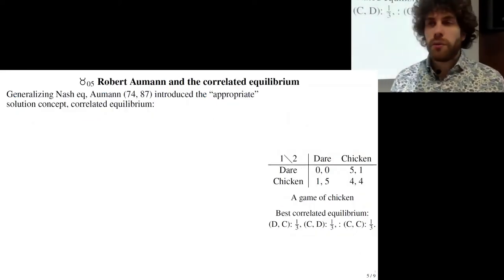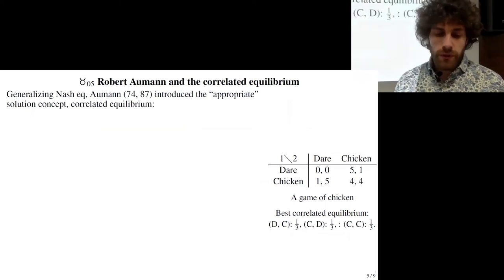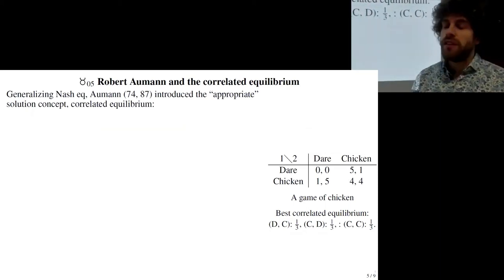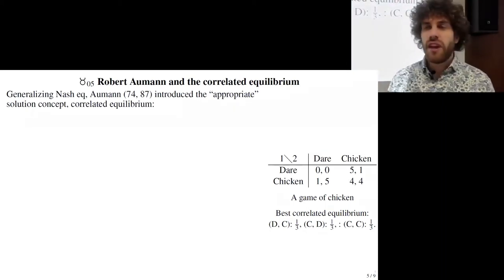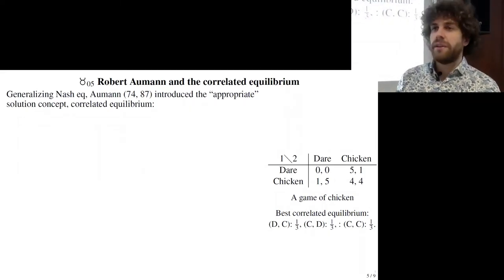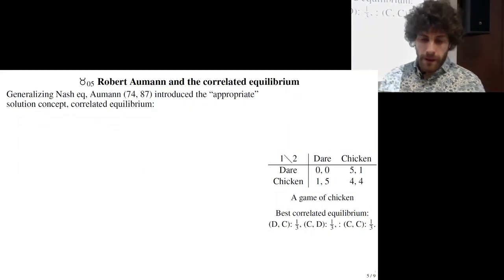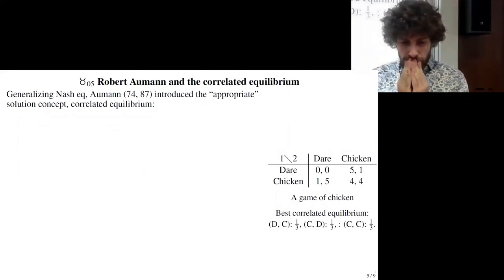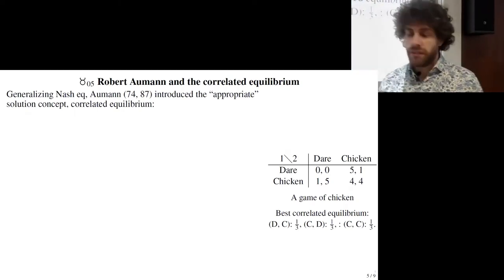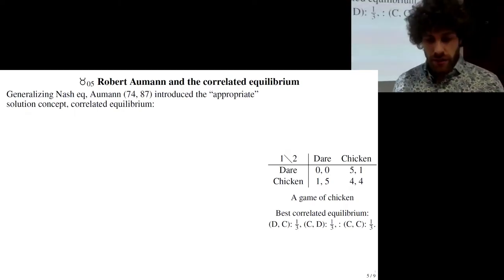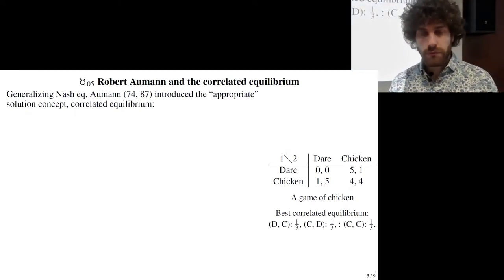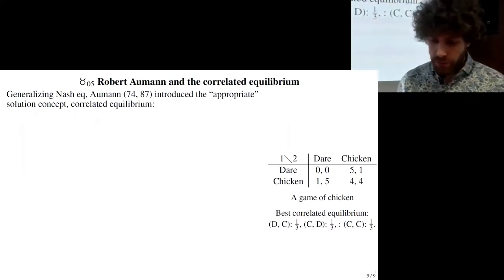Another Nobel Prize winner, Robert Aumann, proposed a generalization of Nash equilibrium called the correlated equilibrium, and he argued that this notion is more appropriate than Nash equilibrium as a solution concept.